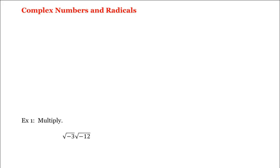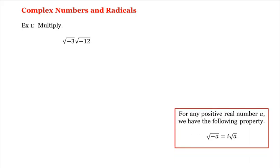Let's work with complex numbers and radicals. For example, let's multiply these two numbers. We're going to be using the following property: for any positive real number a, the square root of negative a is equal to i, the imaginary unit, times the square root of a.